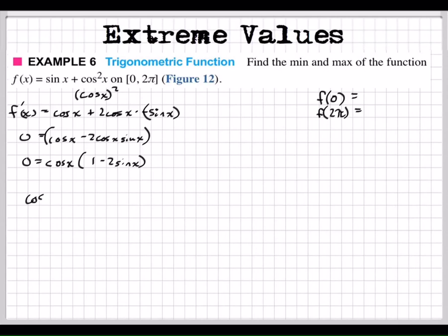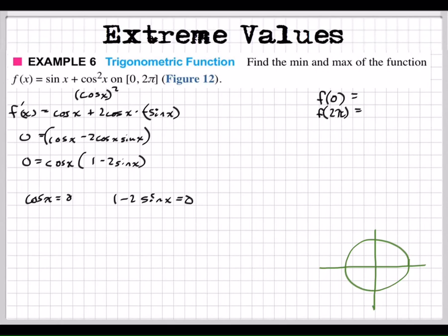So cosine x equals 0, and 1 minus 2 sine x equals 0. For the first one, we'll use the unit circle. Cosine values are the x values and sine are the y values. Where on this circle is x equal to 0? Pi over 2. And the other value that gives me 0 is 3π over 2. Both are within the interval, so x equals π/2 and x equals 3π/2.